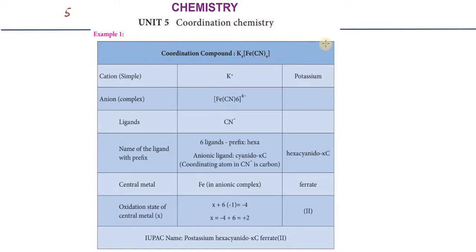First one is the coordination compound K₄[Fe(CN)₆]. First, identify the cation and anion. Potassium is the cation - alkali metals are the cation. The remaining part is the anion.